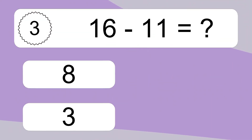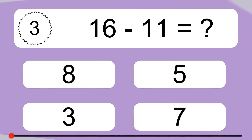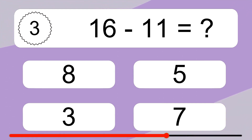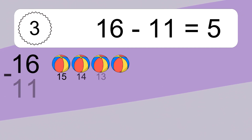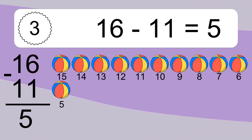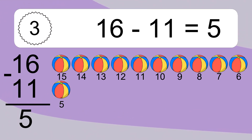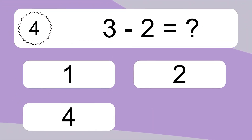16 minus 11 equals what? 16 minus 11 equals 5. Let's count it: 15, 14, 13, 12, 11, 10, 9, 8, 7, 6, 5.